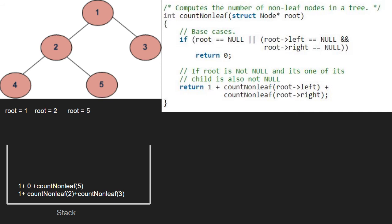As 5 is a leaf node, we return 0 and finish execution for node 5.